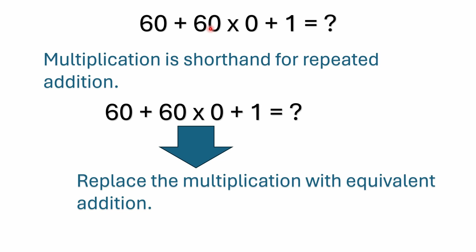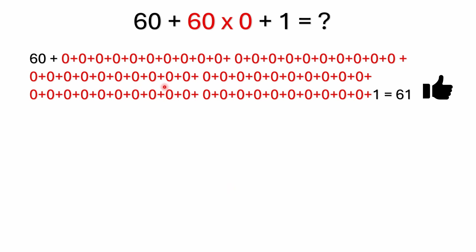Multiplication is shorthand for repeated addition. So you could replace the 60 times zero with equivalent addition. What is 60 times zero? Well, it's the same thing as adding zero 60 times. Much easier to write 60 times zero than to add up 60 zeros. It really doesn't matter how many zeros you add — you're still going to have zero. If you keep adding nothing to nothing, you're still going to have nothing. So if you take 60 and add 60 zeros to it and then add one, you're going to get 61.